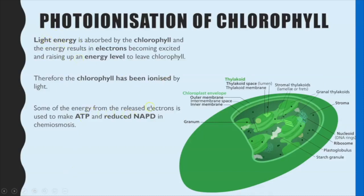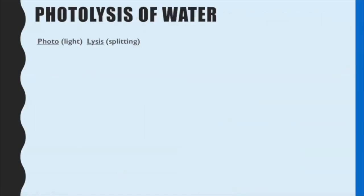The electron is lost due to the energy gained from absorbing the light energy. The energy from the electrons that have been released goes towards making ATP and also reduced NADP. Now, photolysis of water — the way to remember this is to think about the word: 'photo' in biology refers to light, and 'lysis' means to break apart or to split something. So photolysis of water means light energy is splitting water.